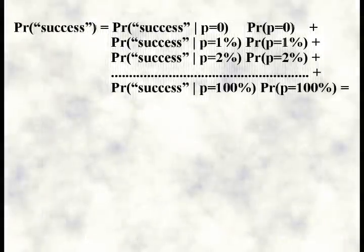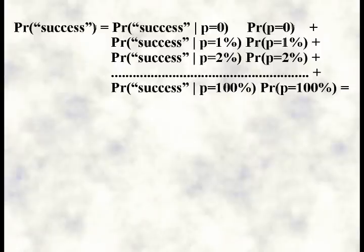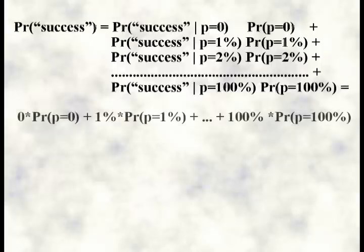Note that before the data, there is no most probable model. That doesn't mean that we don't have a probability for success in a single trial. We can use rule 6 from clip 2b and get that the probability of success is the probability of success given that p is equal to 0, times the probability for p equal to 0, plus the probability of success given p equal to 1%, times the probability for p equal to 1%, and so forth up to p equal to 100%.